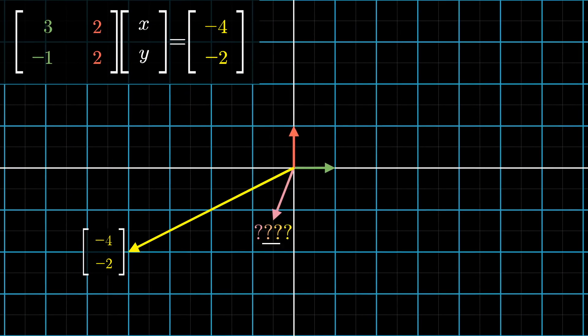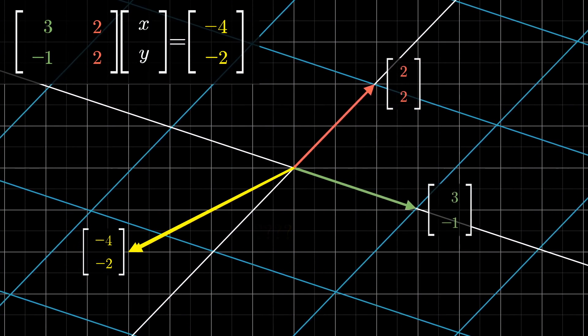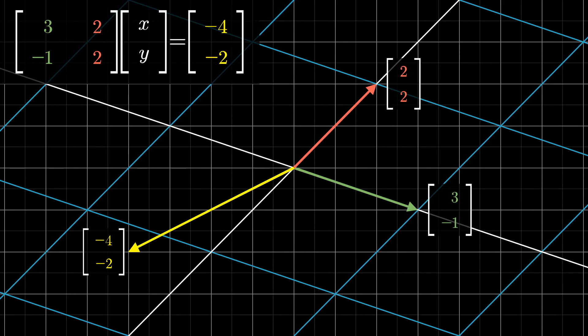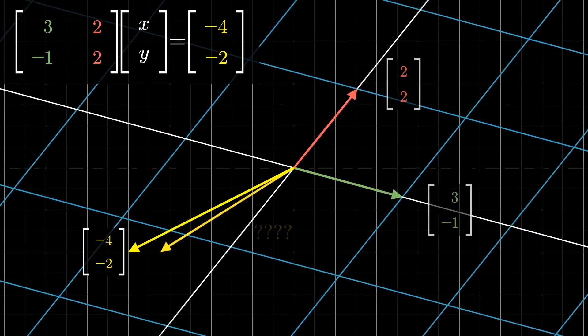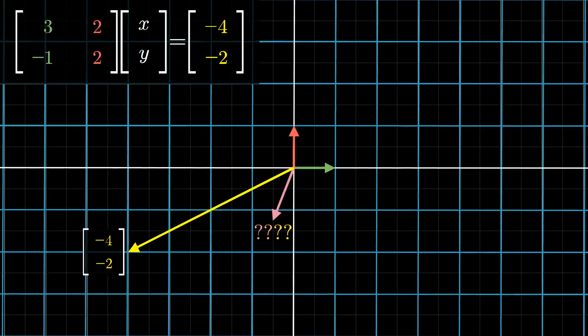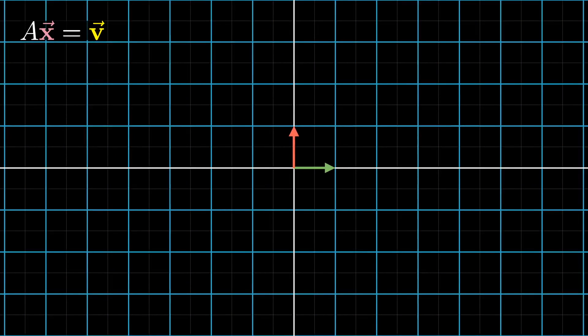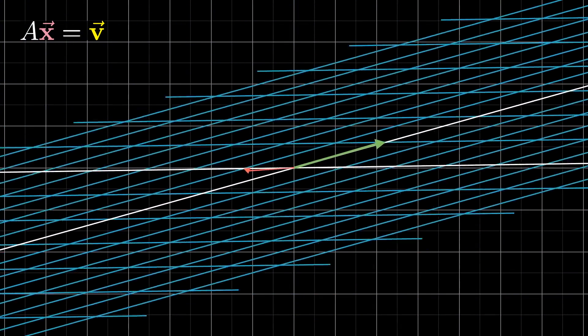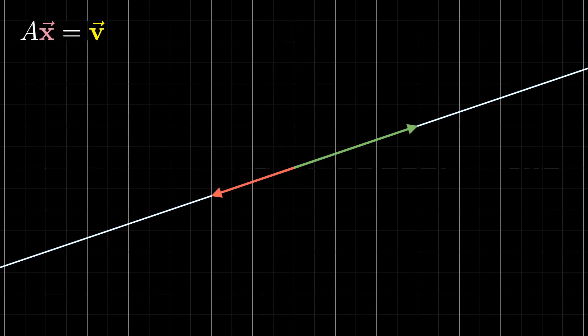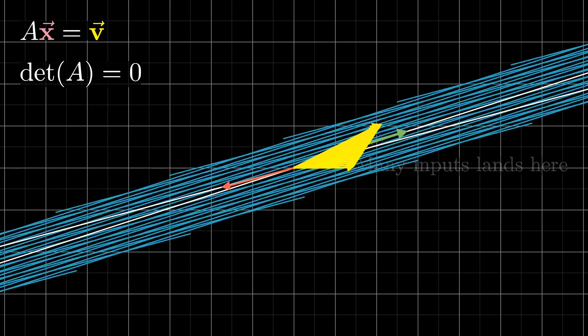So what we have is a sort of puzzle. Which input vector, x, y, is going to land on this output, negative four, negative two? Remember, the type of answer you get here can depend on whether or not the transformation squishes all of space into a lower dimension. That is, if it has a zero determinant. In that case, either none of the inputs land on our given output, or there's a whole bunch of inputs landing on that output.